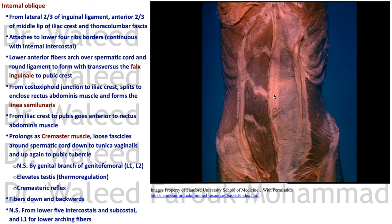In the upper abdomen the internal oblique aponeurosis splits around the rectus abdominis, but in the lower abdomen it passes completely in front. The site of splitting forms the linea semilunaris — a longitudinal groove visible on the outside marking the lateral end of the rectus abdominis and the splitting of the internal oblique aponeurosis.